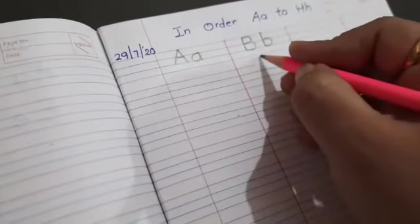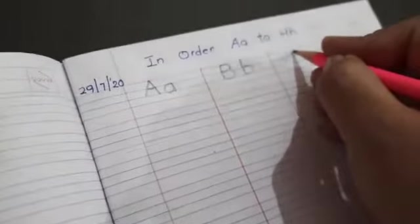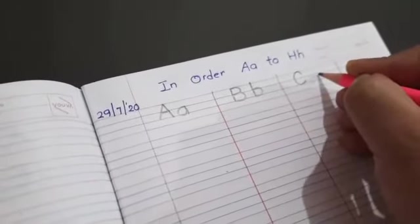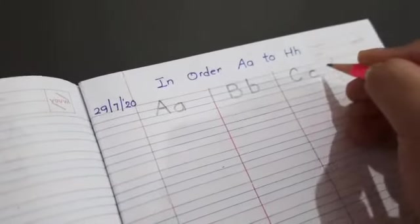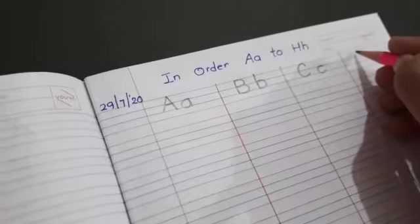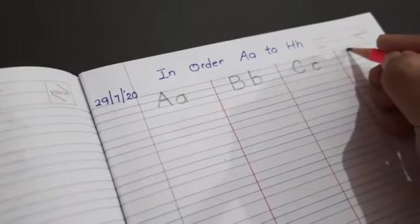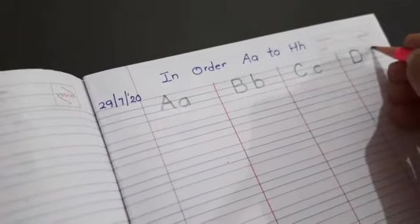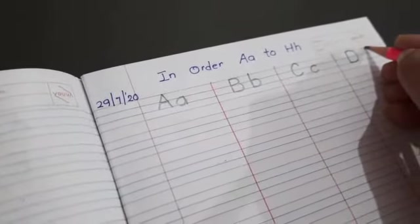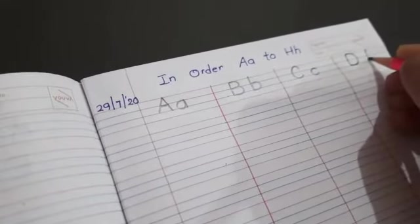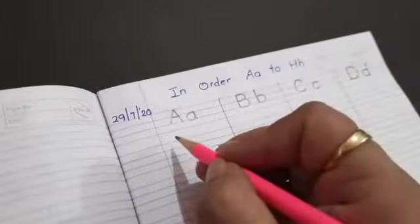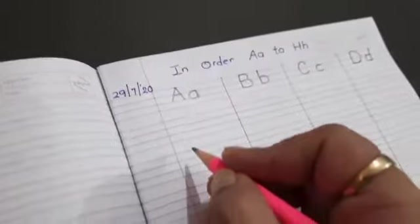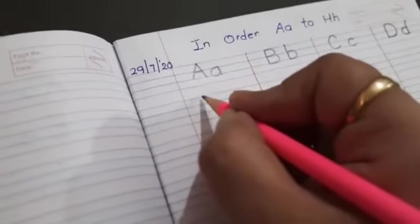What comes after B? C. We will write C, capital C and small c. After C, which alphabet will come? D. My children know how to write D. Capital D and small d, like this. A, B, C, D. Now we will write E, capital E, small E like this.